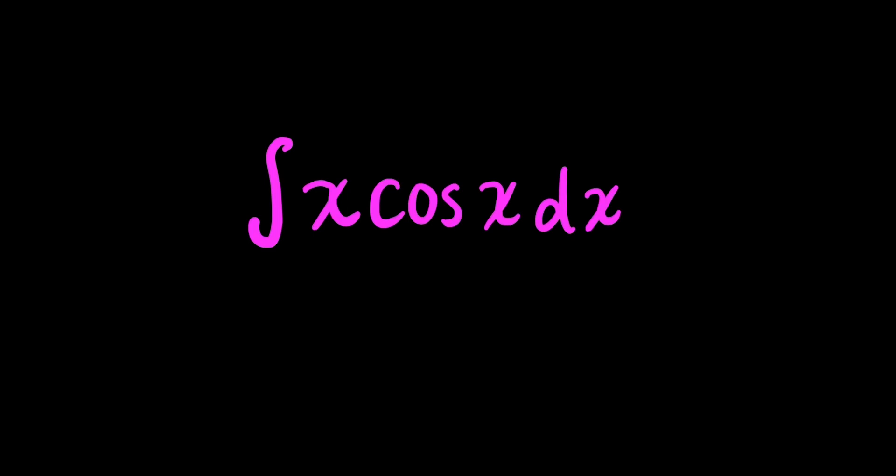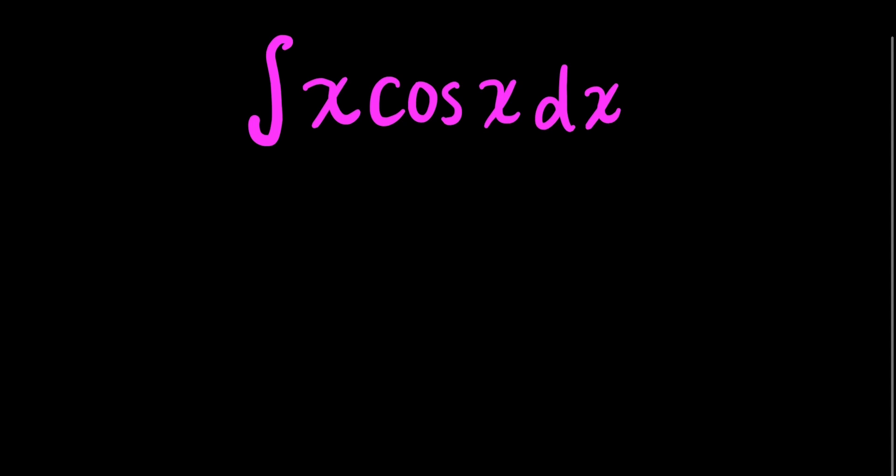Okay, so let's integrate x cosine x dx. When first looking at this, we could tell that this is going to be an integration by parts problem because we have two parts in this integral. We have x and cosine x.